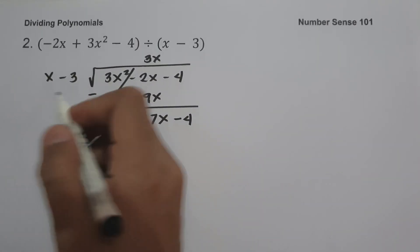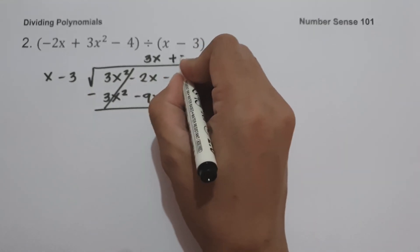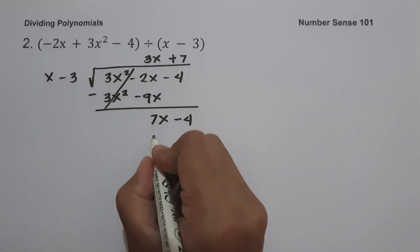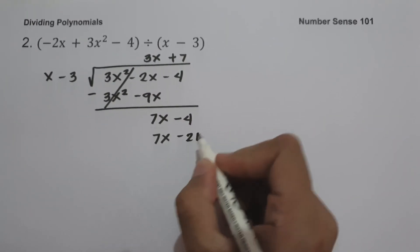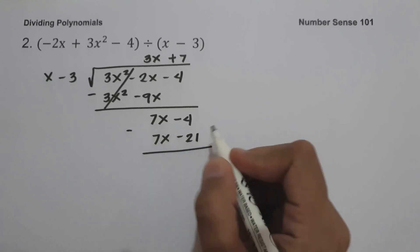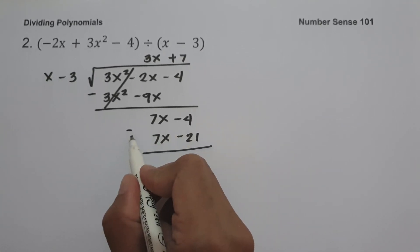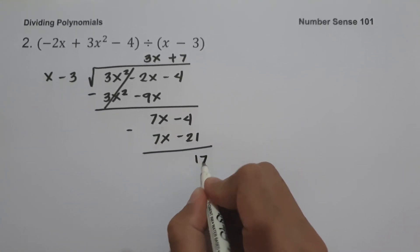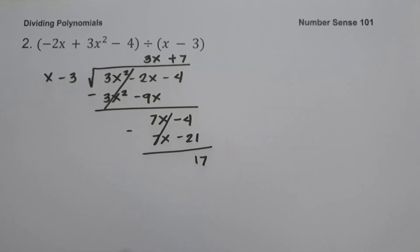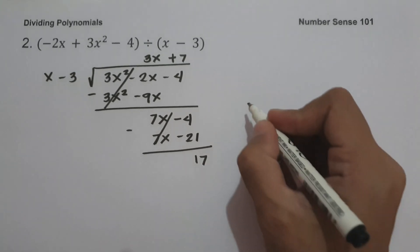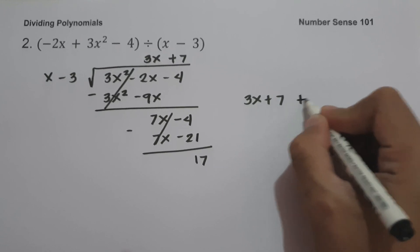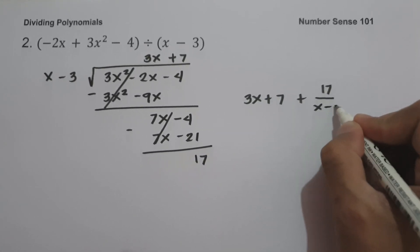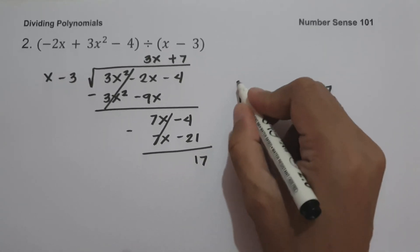Let us bring down negative 4. Then 7x divided by x is 7, and 7 multiplied by negative 3 is negative 21. So let us subtract: negative 4 minus negative 21 gives us 17. Since the degree of the remainder is less than the degree of the divisor, we write our answer as 3x plus 7 plus 17 over x minus 3. And this will be our answer.